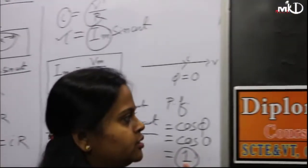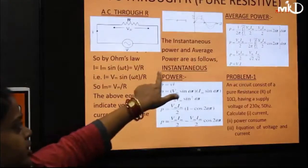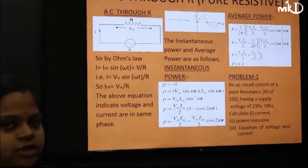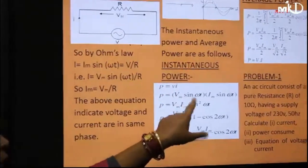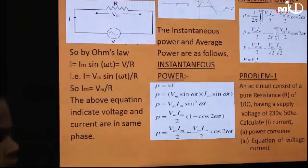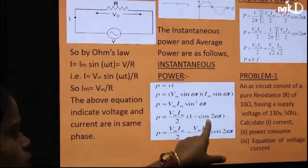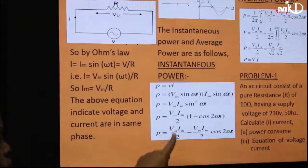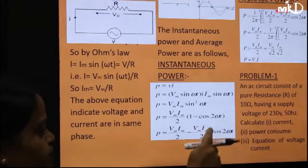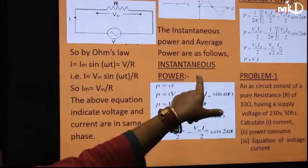If we find the value of power — instantaneous power — we know P = V × I. The value of V = Vm sin(ωt) and I = Im sin(ωt), so P = Vm Im sin²(ωt). Writing sin²(ωt) as (1 − cos(2ωt))/2, we get P = Vm Im/2 − (Vm Im/2) cos(2ωt). This is the instantaneous power.